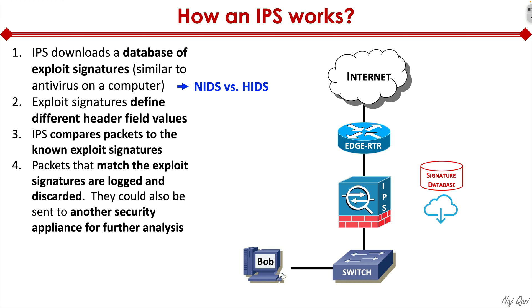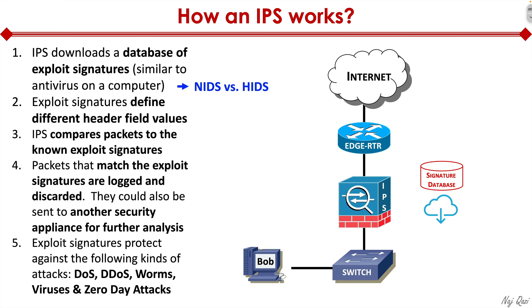IPS says this traffic is bad — not only will it deny that traffic, but it will also log it so it can be later analyzed by a security expert. IPS can also send this traffic to another security appliance for further analysis. Exploit signatures protect against denial-of-service attacks, distributed denial-of-service attacks, worms, viruses, and zero-day attacks.